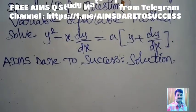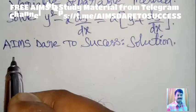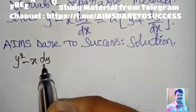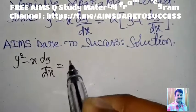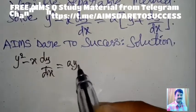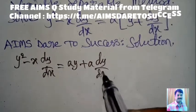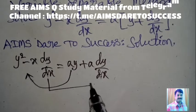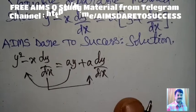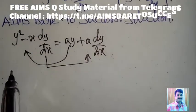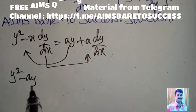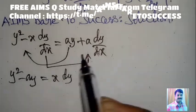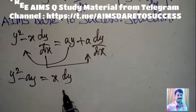Given y² − x(dy/dx) = a(y + dy/dx). Multiplying inside: a·y + a(dy/dx). Moving ay to the left side and −x(dy/dx) to the right side, we get y² − ay = x(dy/dx) + a(dy/dx).